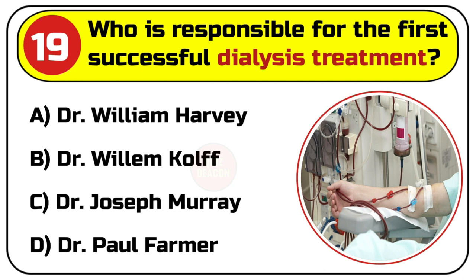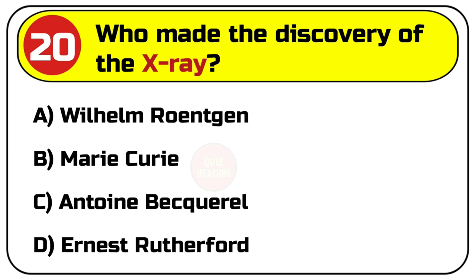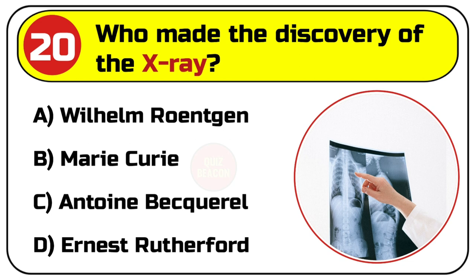Correct answer is B. Dr. Willem Kolff. Question number 20. Who made the discovery of the X-ray? Options are: A. Wilhelm Röntgen, B. Marie Curie, C. Antoine Becquerel, D. Ernest Rutherford.